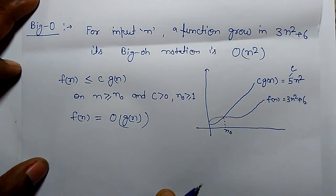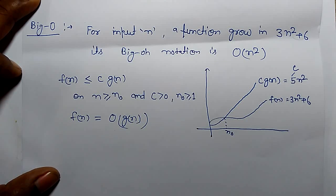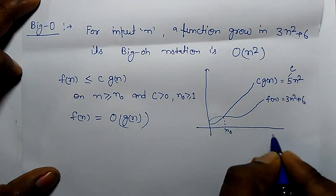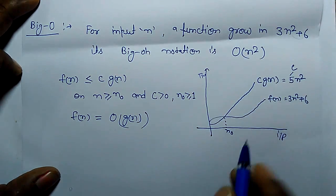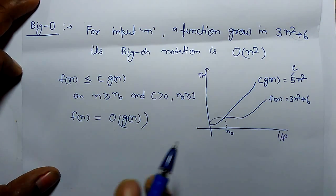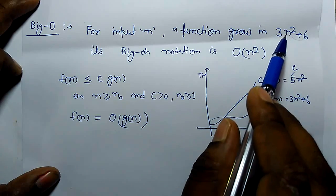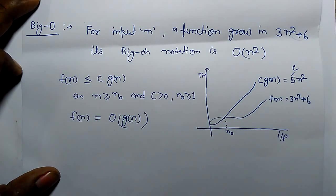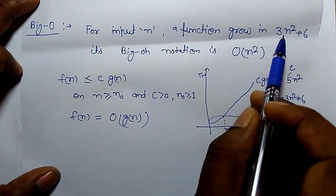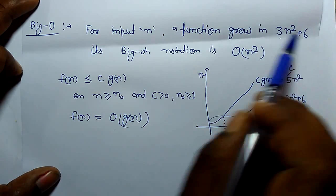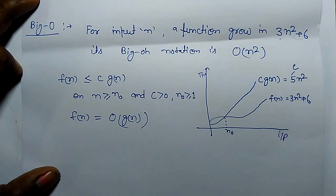After analyzing an algorithm, we represent it in Big O notation. For input N, there is a graph — one axis for input and the other for time taken by a particular function. If a function grows as 3N² + 6, its Big O notation would be O(N²).